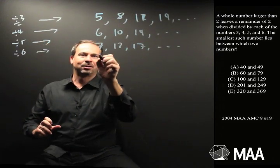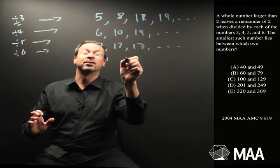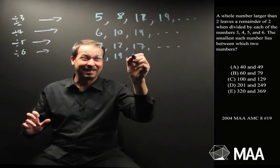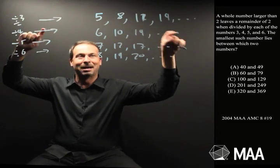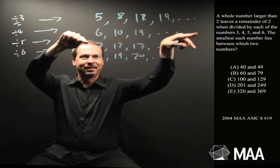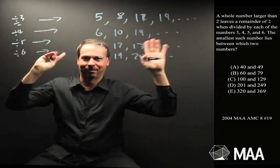And divisible by 6: 2 more than 6, which is 8; 2 more than 12, which is 14; 2 more than 18, which is 20, and so on. So I know it's a number in this list, and in this list, and in this list, and in this list. Great.